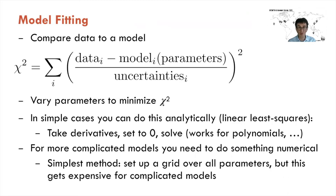In simple cases you can do this analytically — for instance, linear least squares: take the derivatives of chi-squared with respect to the parameters, set them equal to zero, and solve simultaneously, yielding simple solutions for polynomials. For more complicated models you need numerical approaches. The simplest is a grid: compute chi-squared over every possible combination of parameter values and find the lowest. This is straightforward but can become very time-consuming and expensive for complicated models.